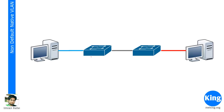The next thing we're going to talk about is non-default native VLAN. VLAN is a topic we discussed many times — dedicated about four videos for it, days 11, 12, 13, and around day 24 or 34. What we are covering today is non-default native VLAN. By default, the native VLAN in a Cisco switch is VLAN 1 — that is the default native VLAN.